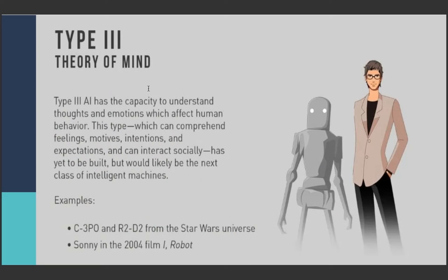Now coming to the third kind - Theory of Mind. This is where emotions of humans are going to come into picture. This type can comprehend feelings, motives, intentions, and expectations, and can interact socially. It has yet to be built but would likely be the next class of intelligent machines.